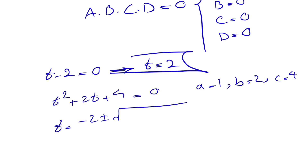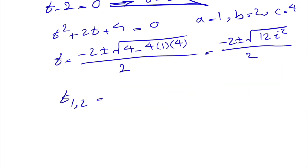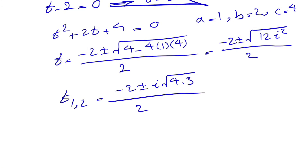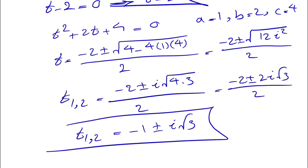The discriminant is b squared minus 4ac, which is 4 minus 16, giving minus 12. So we have minus 2 plus or minus the square root of minus 12, divided by 2. Since minus 12 equals 12 times i squared, we get minus 2 plus or minus the square root of 4 times 3 times i squared, all divided by 2. Taking out 2i: that's minus 2 plus or minus 2i root 3, divided by 2, which simplifies to minus 1 plus or minus i root 3. These are our second and third complex answers.